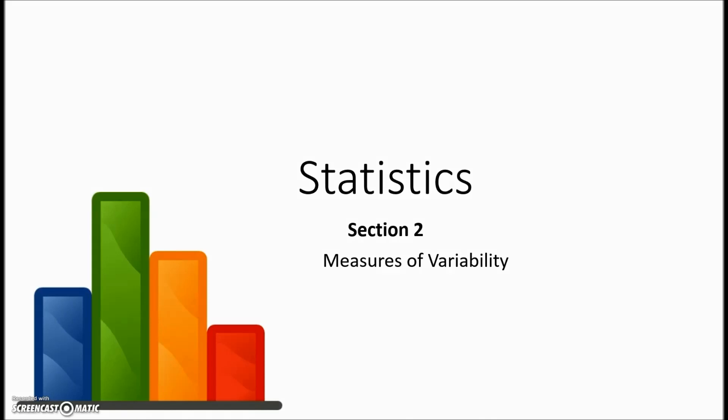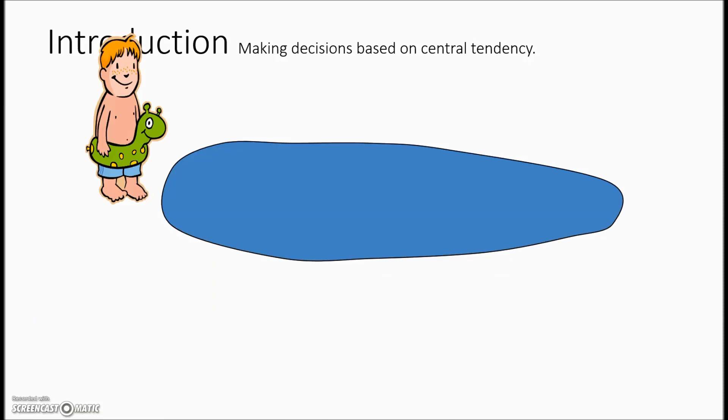Statistics unit section 2 measures of variability. To help us introduce this we have this youngster who's willing to wade across this pond because he's told that the average depth is 4.2 feet.